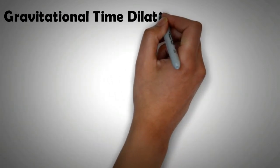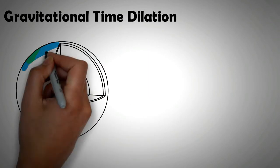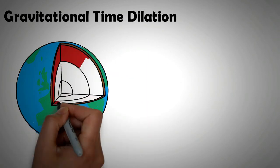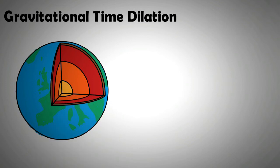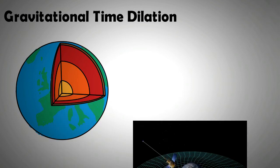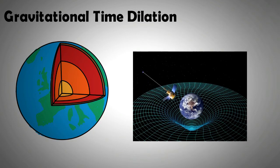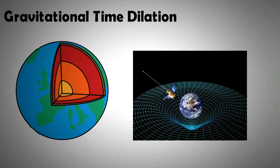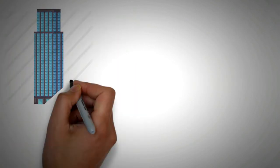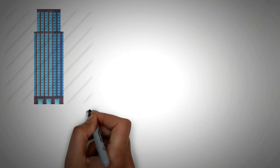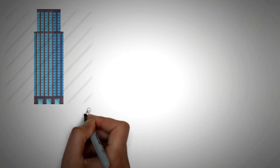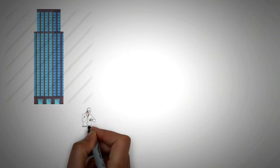Now let's look at gravitational time dilation. The closer an object is to the center of a gravitational field, the slower its march forward in time. Consequently, the further away an object is from the center of a gravitational field, the more time it experiences compared to an object that is close to the center. For example, a person living at the top of a skyscraper would have clocked more seconds of life than someone living at the bottom floor. This effect is minuscule but grows with increasing distances.